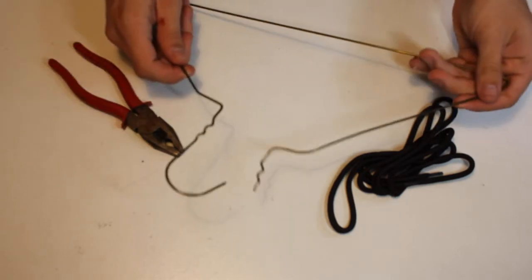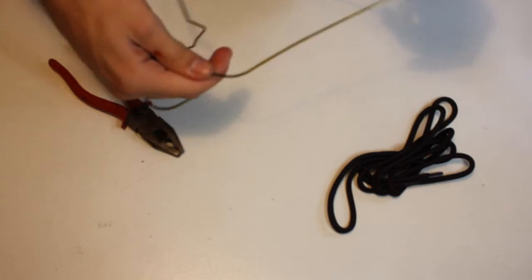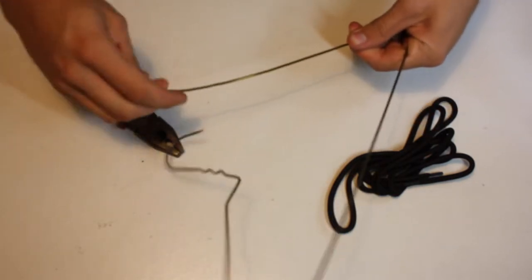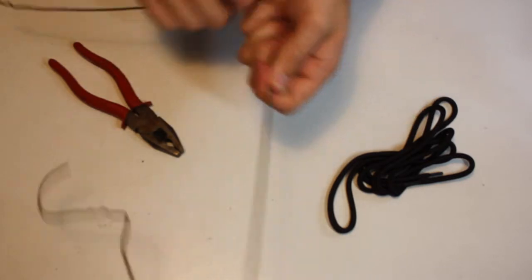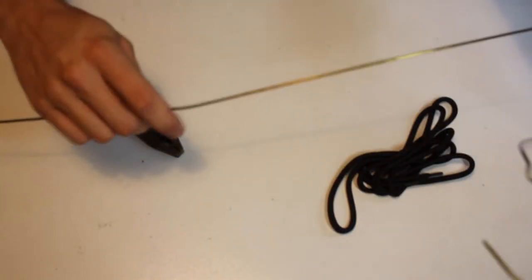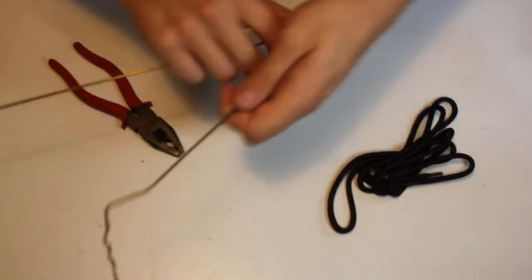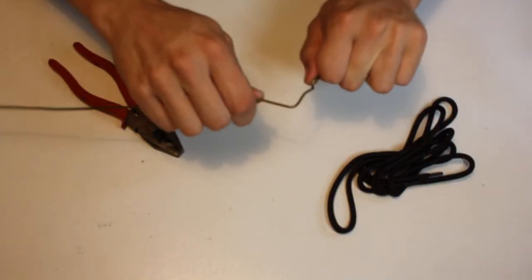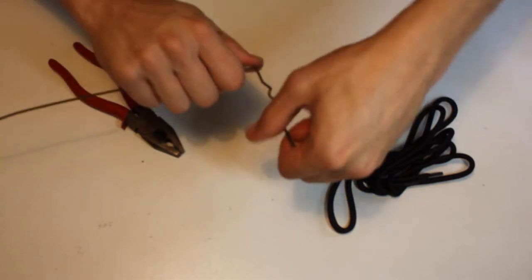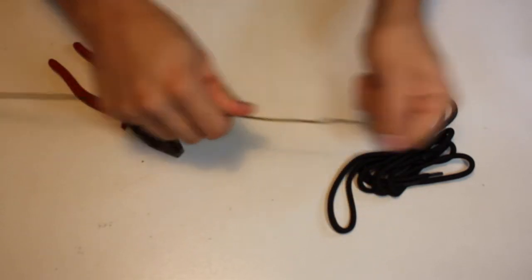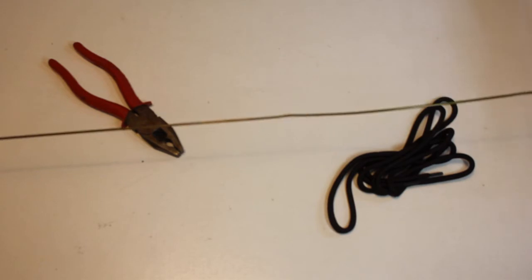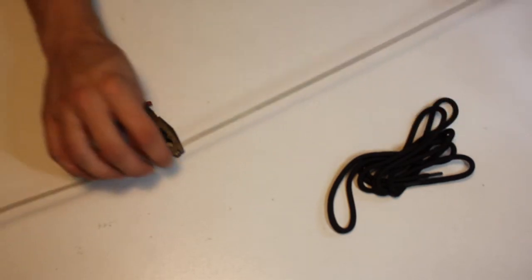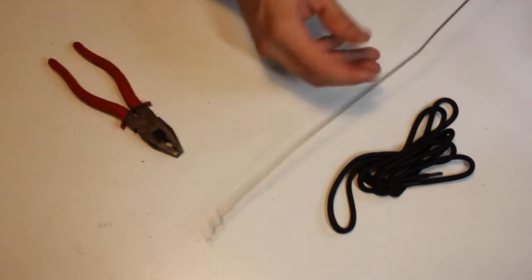So, now we're going to be straightening this out by hand, just to get a straight piece to begin with. And this only takes just a few seconds here. And some might find it helpful to use pliers for this step, just because it's kind of hard to grip the thin wire and bend it sometimes.